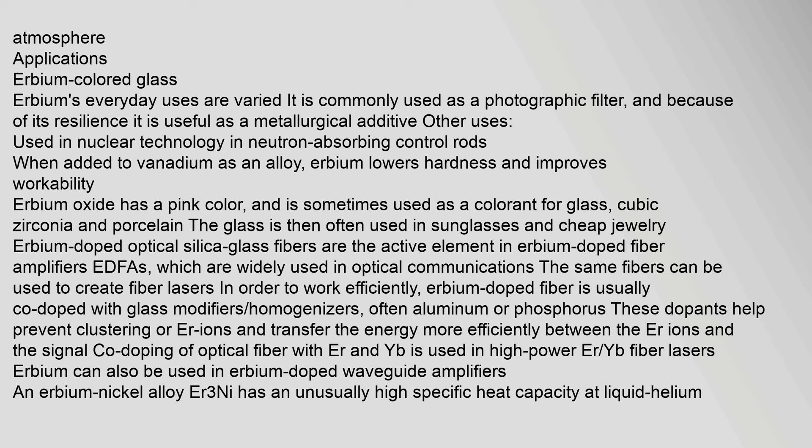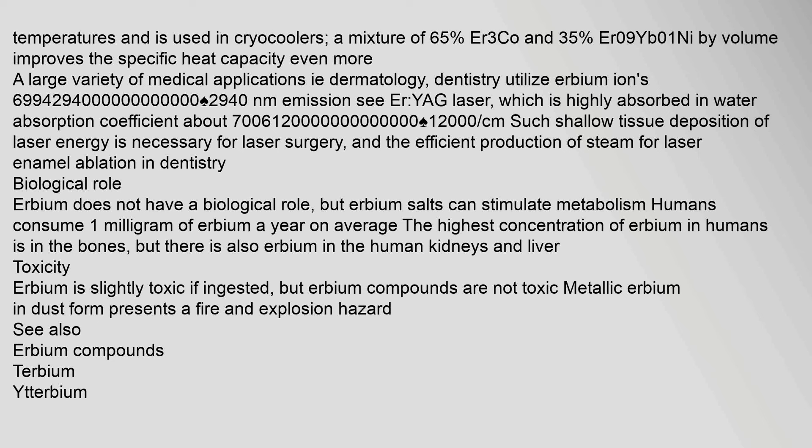Erbium-doped optical silica glass fibers are the active element in erbium-doped fiber amplifiers (EDFAs), which are widely used in optical communications. The same fibers can be used to create fiber lasers. Erbium-doped fiber is usually co-doped with glass modifiers and homogenizers, often aluminum or phosphorus, to prevent clustering of Er ions and transfer energy more efficiently. Co-doping of optical fiber with Er and Yb is used in high-power Er/Yb fiber lasers. An erbium-nickel alloy (ErNi) has an unusually high specific heat capacity at liquid helium temperatures and is used in cryocoolers.